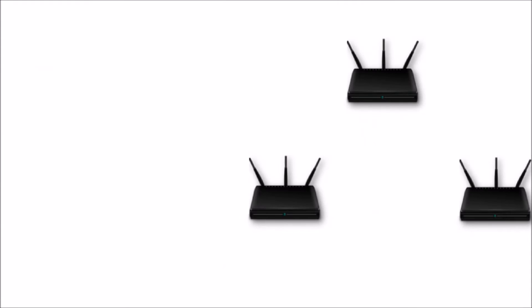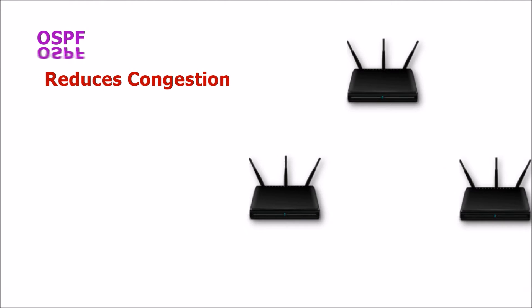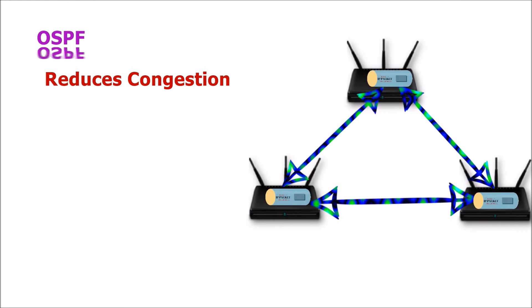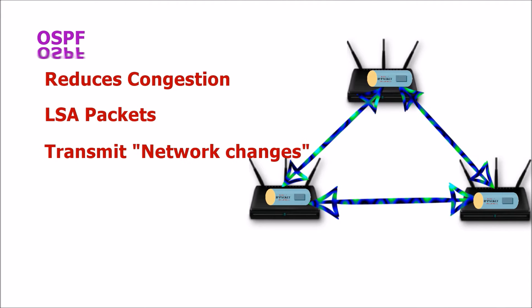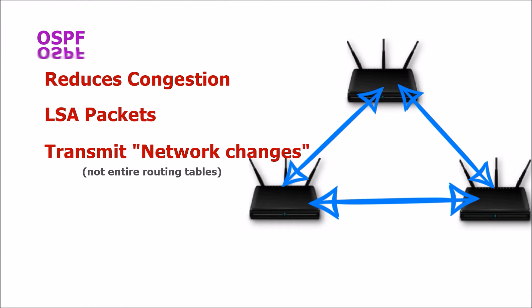Link state routing protocols like OSPF try to address many of the shortcomings of distance vector routing. One important area improved upon is reducing network congestion. Routers using OSPF transmit link state advertisement packets when reaching convergence. After convergence is reached, only the changes that occurred within the network will be transmitted, which reduces the load on the network.